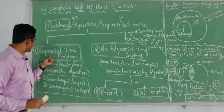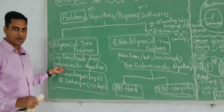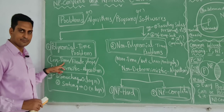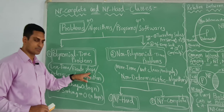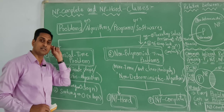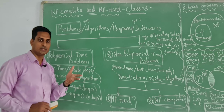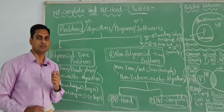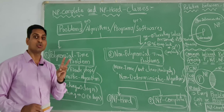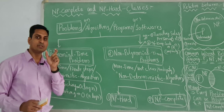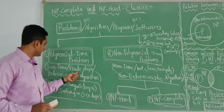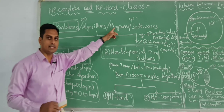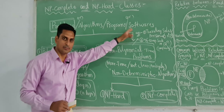Polynomial time problems will take less time — finite number of steps. In our first unit, we discussed the characteristics of an algorithm: input, output, and definiteness — it should be definable and very clear, not ambiguous. You should get an accurate result with a finite number of steps, then we write the algorithm, type the program, and software is designed.